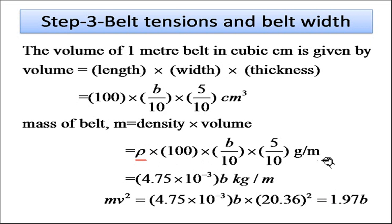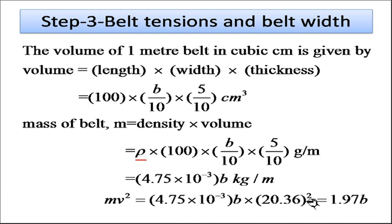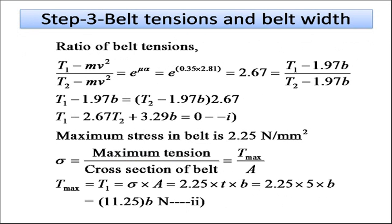The mV² value is calculated as 4.75 × 10⁻³ × b × (20.36)² = 1.97b. Now substituting into the tension ratio equation: (T1 − 1.97b) / (T2 − 1.97b) = 2.67. Cross-multiplying gives: T1 − 2.67·T2 + 3.29b = 0. This is equation one, with three unknowns: T1, T2, and b.